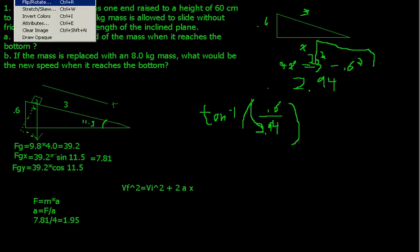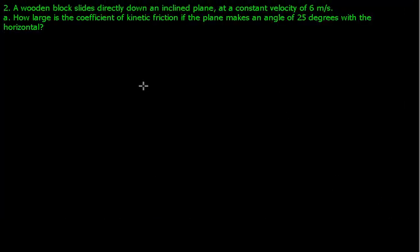Time for another example. I'm just going to copy the part A here on this one because we never have time for a part B. A wooden block slides directly down an inclined plane at a constant velocity of 6 meters per second. How large is the coefficient of kinetic friction if the plane makes an angle of 25 degrees with the horizontal?